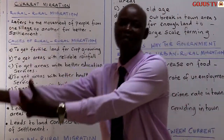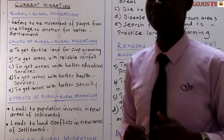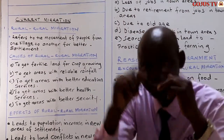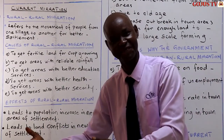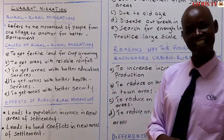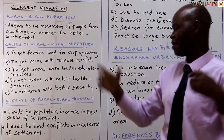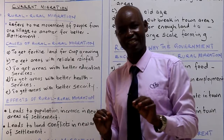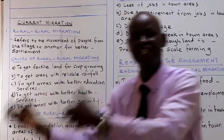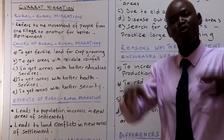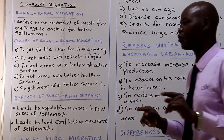Then another kind of migration: we have what we call urban-rural migration. Urban means town and rural means village. So people are leaving towns and going back to villages. Urban-rural migration refers to the movement of people from towns back to villages looking for better settlement, and there are reasons as to why those people are leaving.